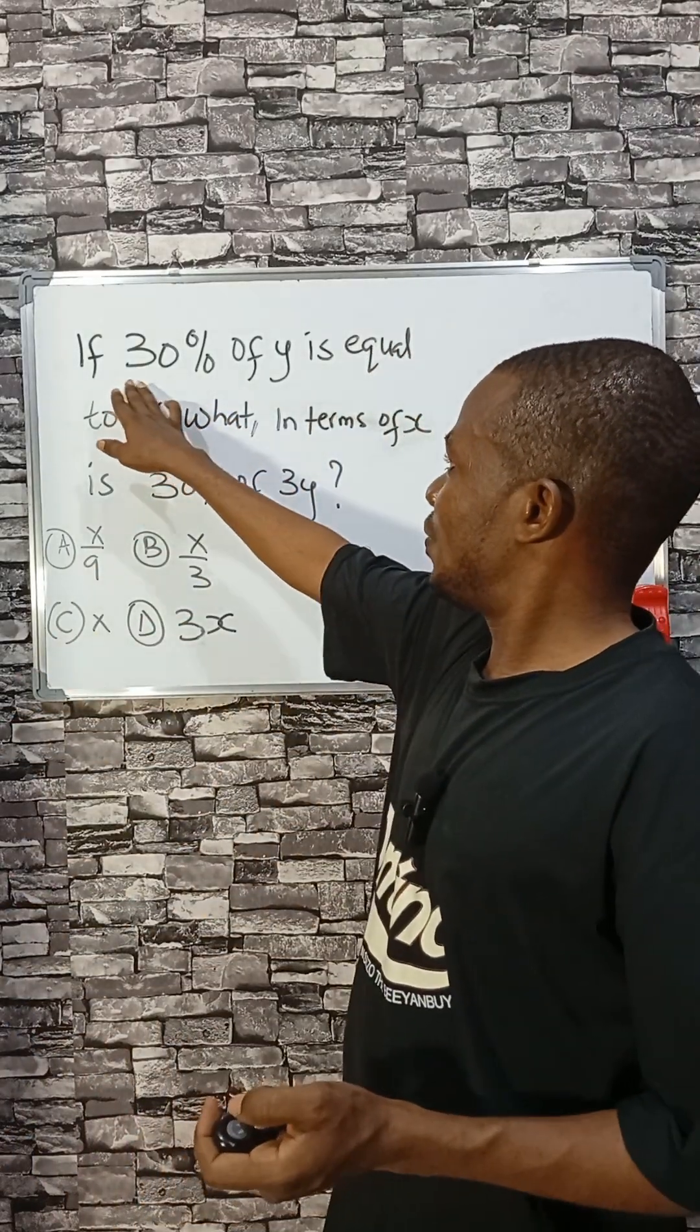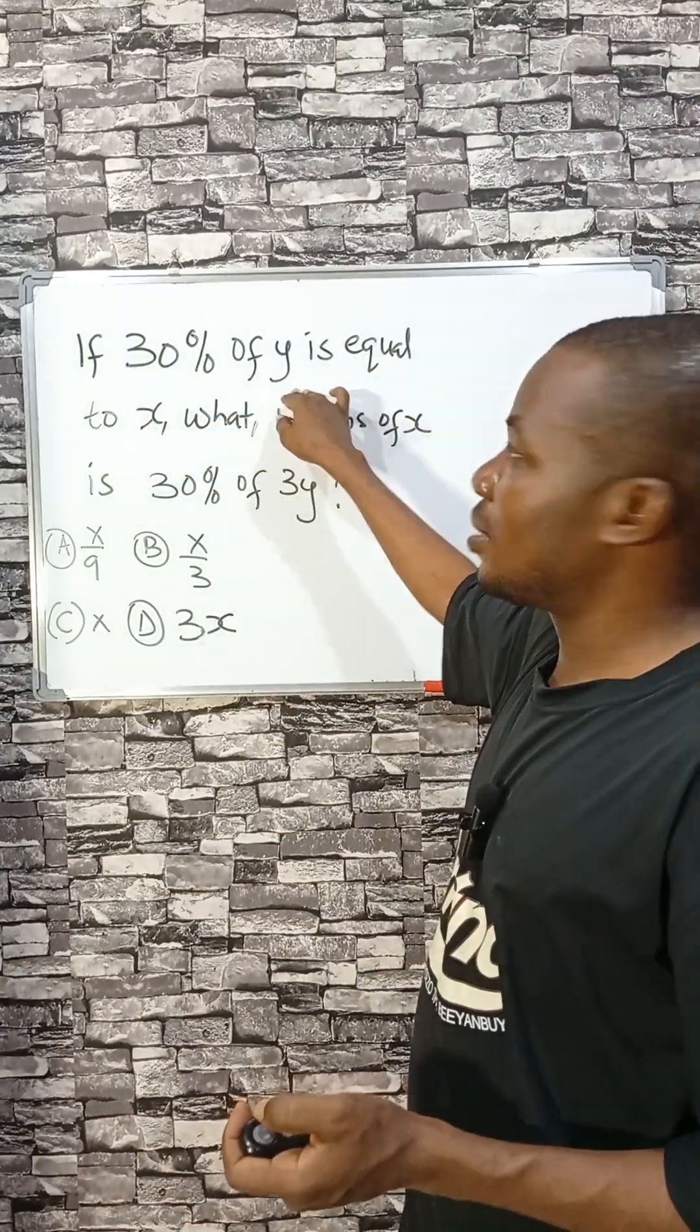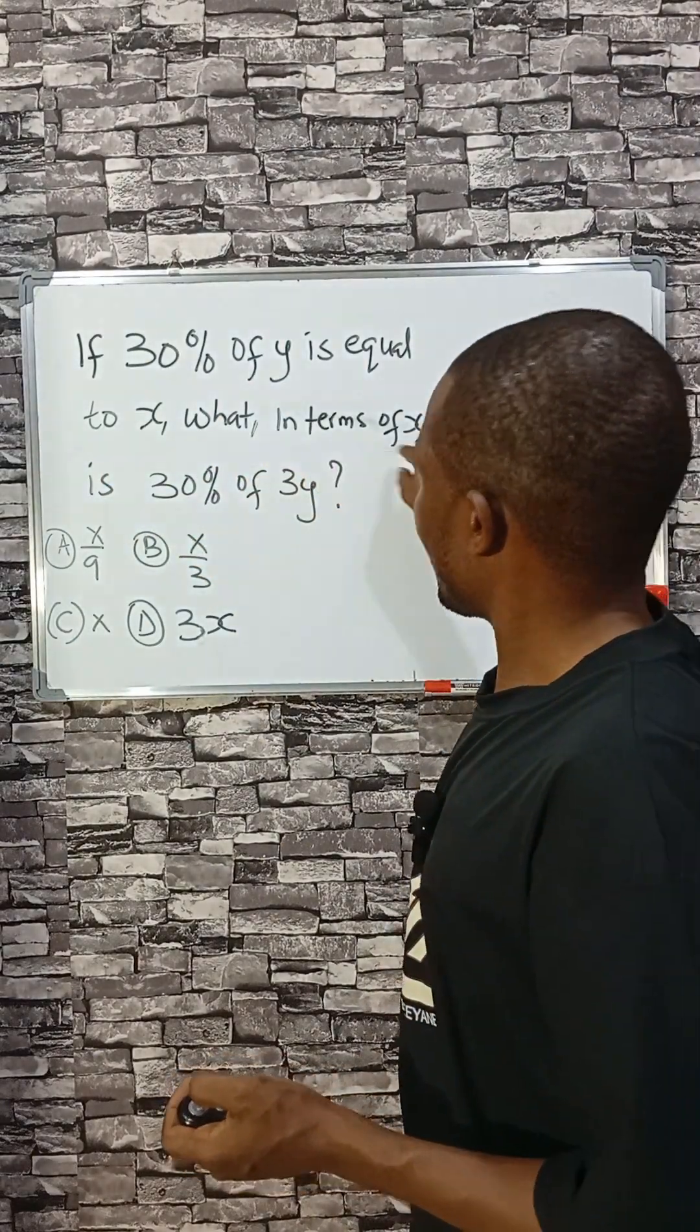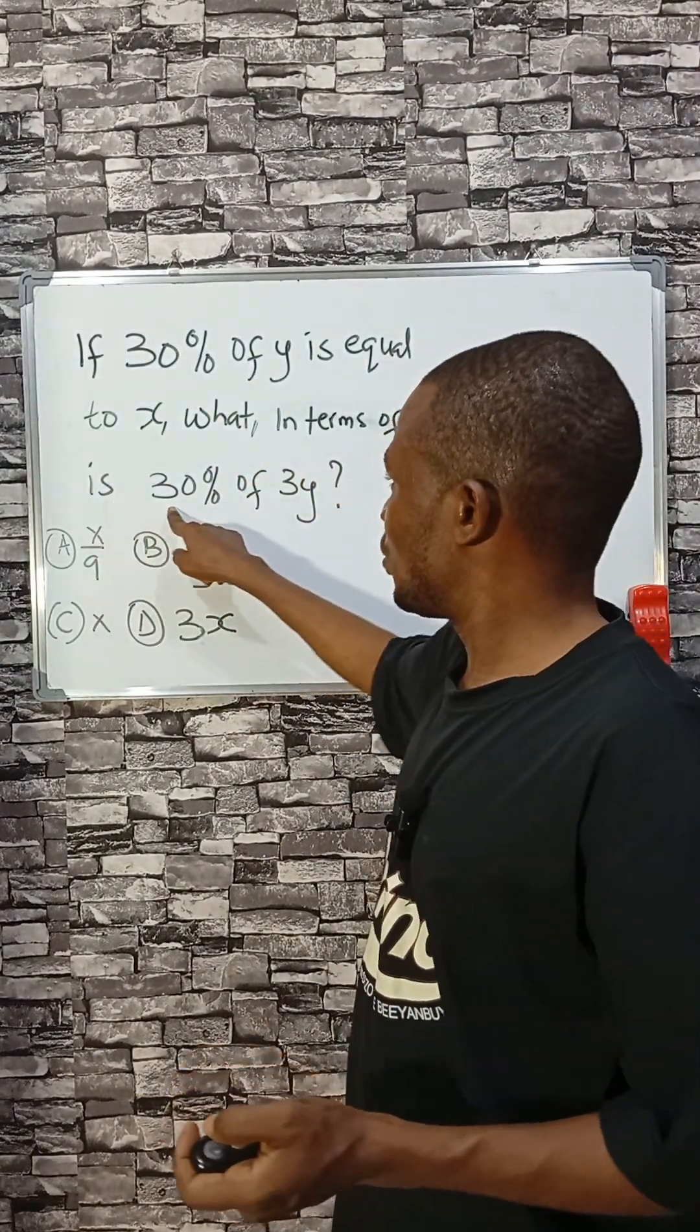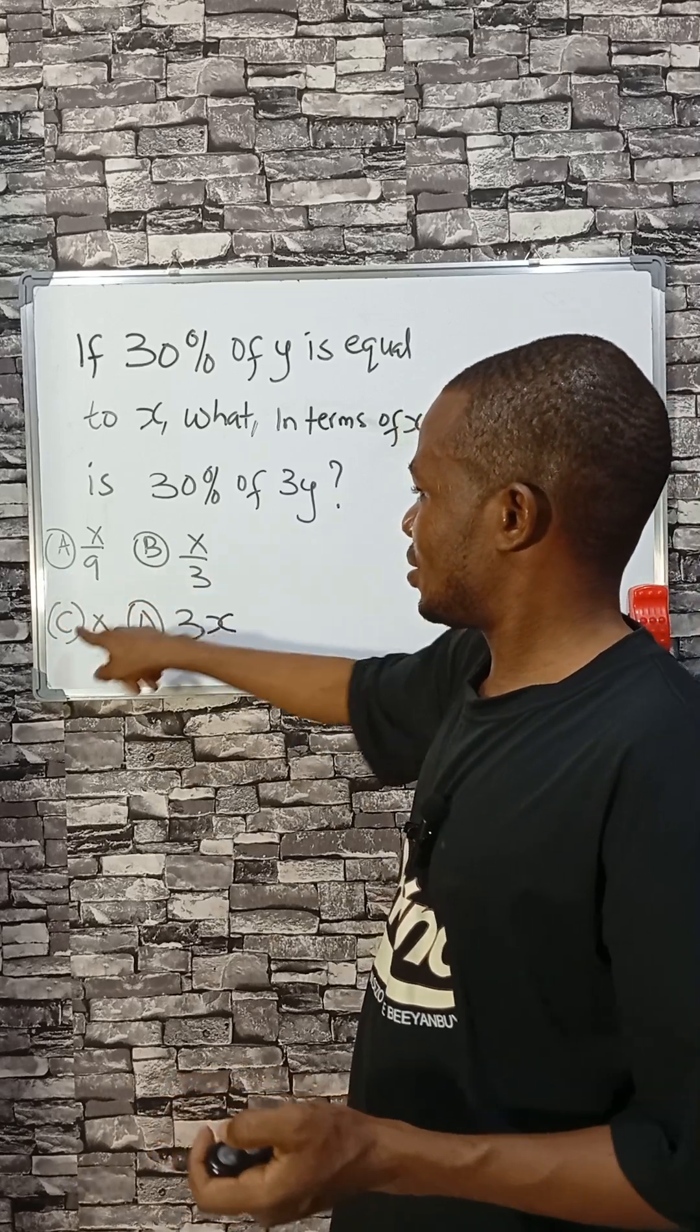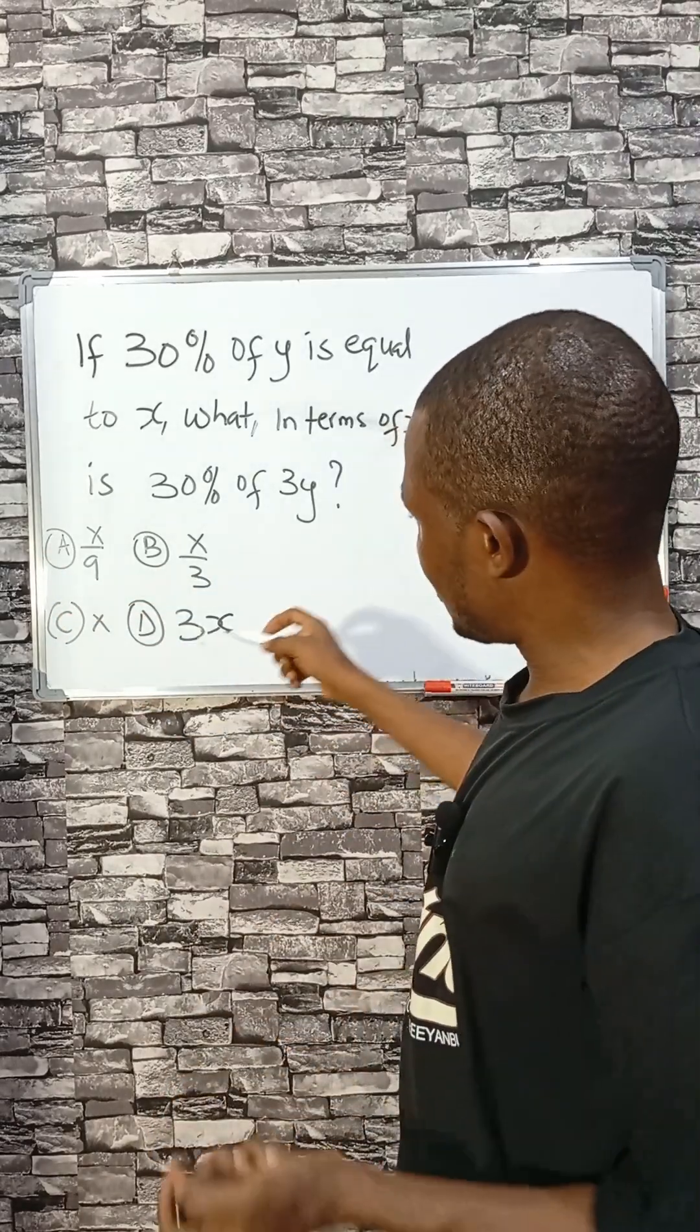Let's consider this: if 30% of y equals x, what, in terms of x, is the value of 30% of 3y? One of these options is correct.